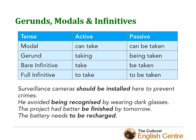So 'can take' turns into 'can be taken'. A gerund — 'taking' — turns into 'being taken'. And finally, a bare infinitive 'take' turns into 'be taken', and a full infinitive 'to take' turns into 'to be taken'. Have a look at these examples.